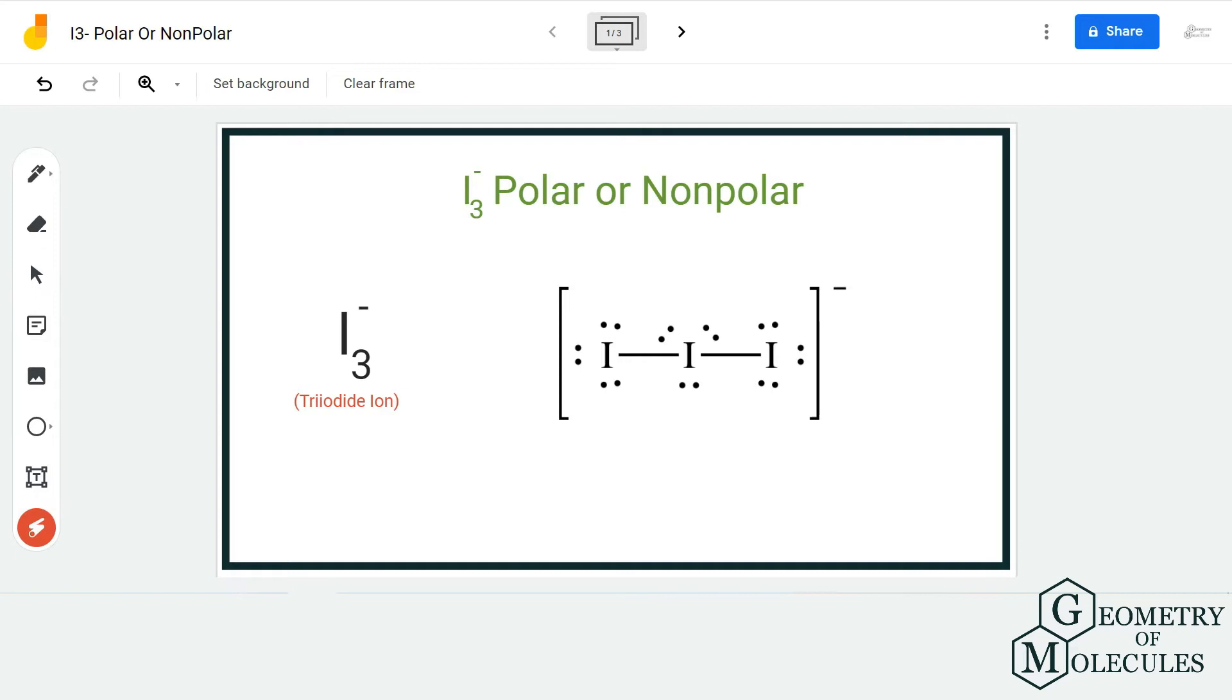Hi guys, welcome back to our channel. In today's video we are going to help you determine if I3 minus ion is a polar or non-polar ion. To determine its polarity, we first need to look at its Lewis structure.